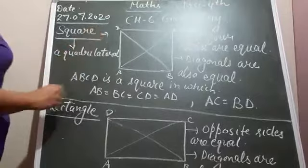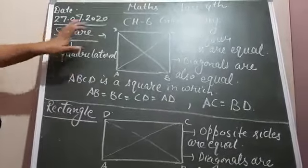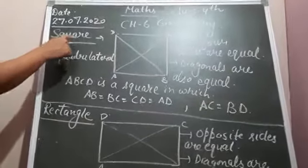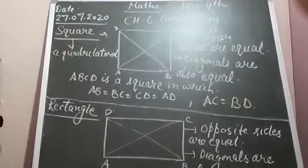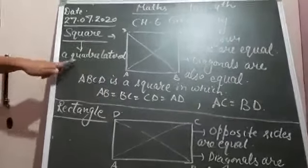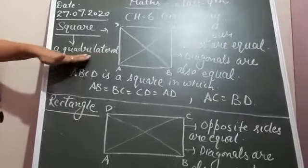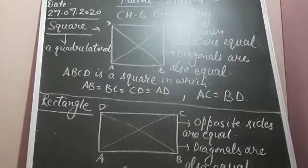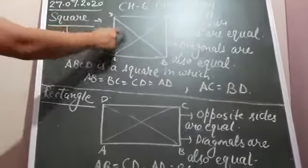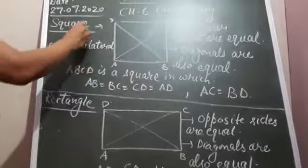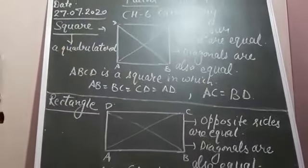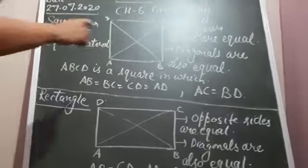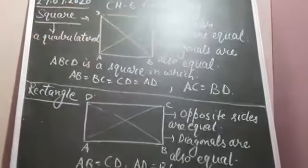Next is square. All of you know what a square is — it has four sides. First of all, you should know that square is a quadrilateral. A quadrilateral is a figure bounded by four line segments. Square is also having four line segments, so square is also a quadrilateral. In a square, all four sides are equal.